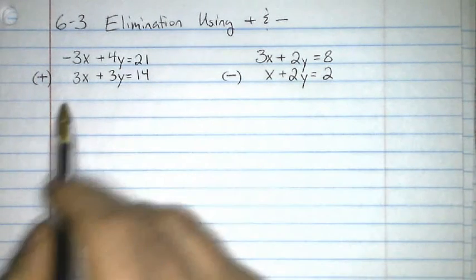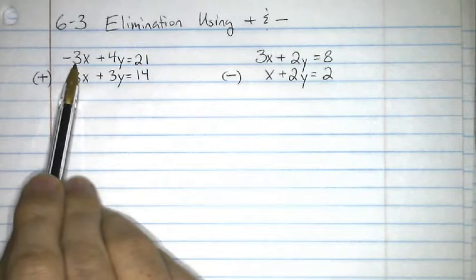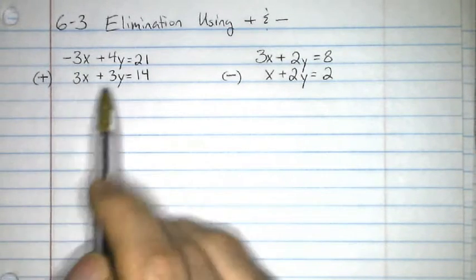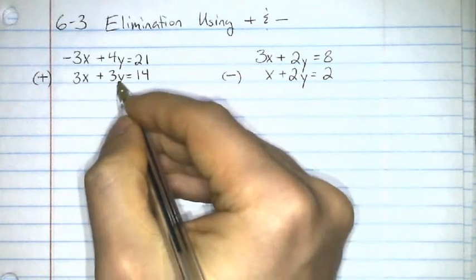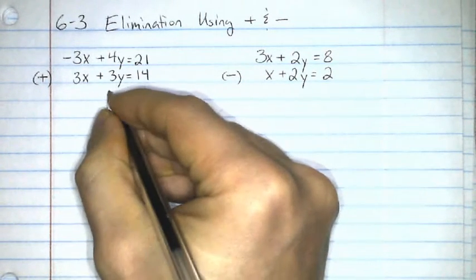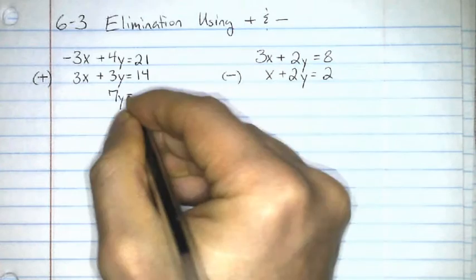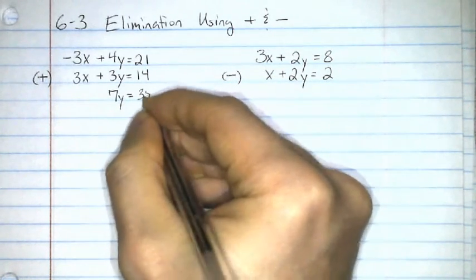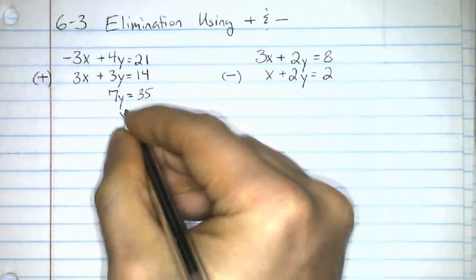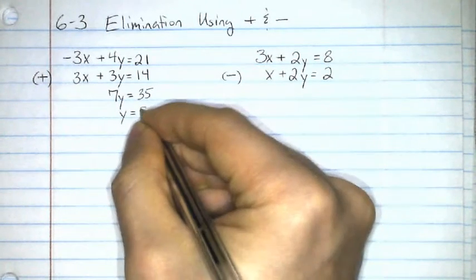Now, when we do this, negative 3x plus 3x, no x's. It cancels out. 4y plus 3y, 7y. 21 plus 14, 35. Divide both sides by 7. We get y equals 5.